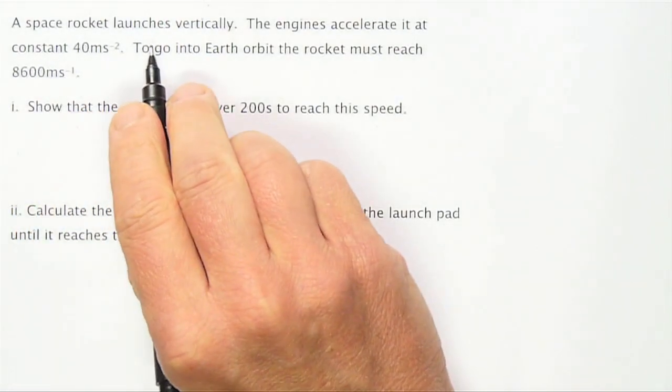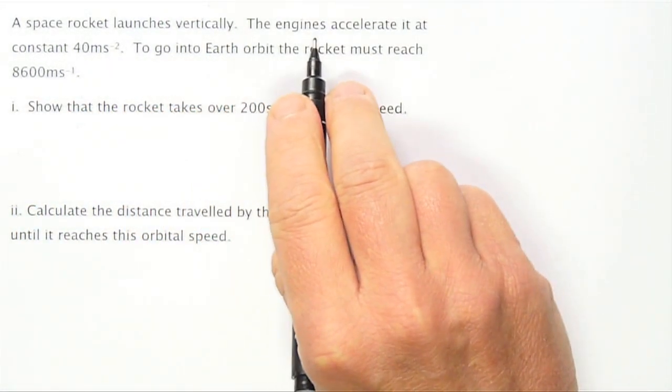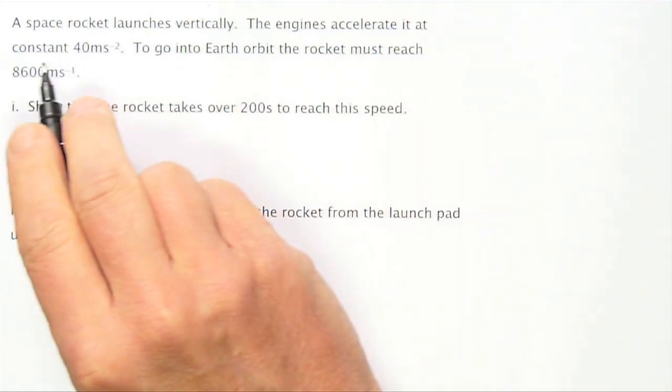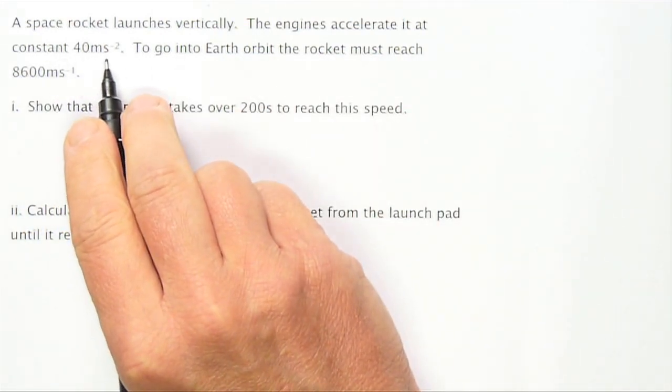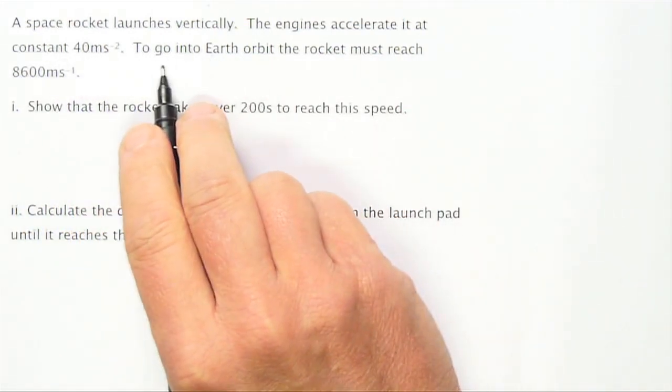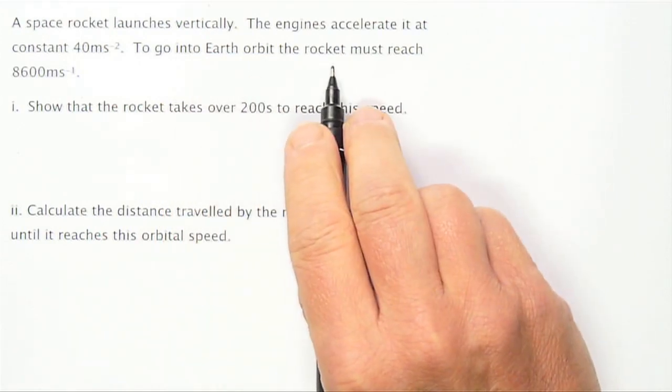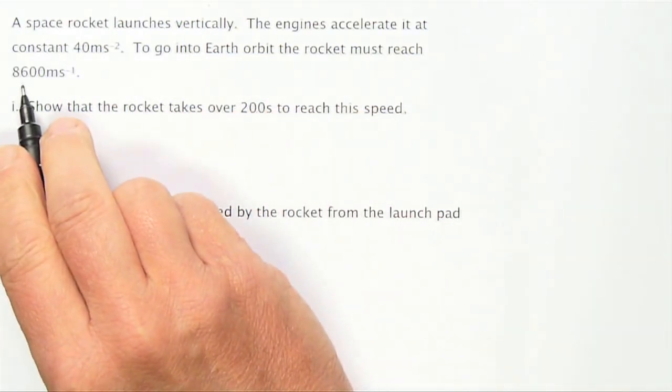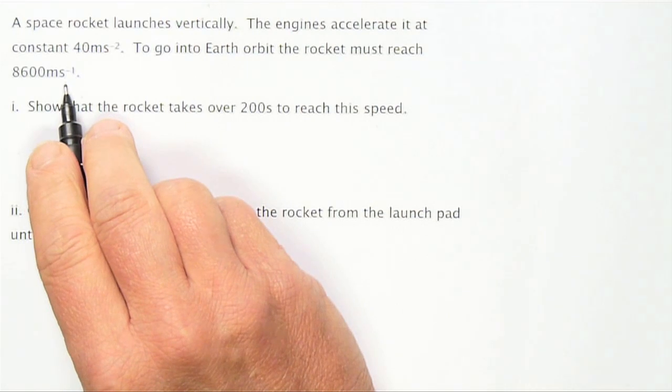A space rocket launches vertically. The engines accelerate it at constant 40 meters per second squared. To go into Earth orbit the rocket must reach 8600 meters per second.